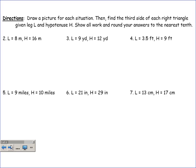Moving on, we have these six problems. It says draw a picture for each situation, then find the third side of the right triangle. L means leg, H means hypotenuse. Show your work, round your answers to nearest tenth where applicable. I'm going to draw a picture - all my pictures are basically going to look about the same.